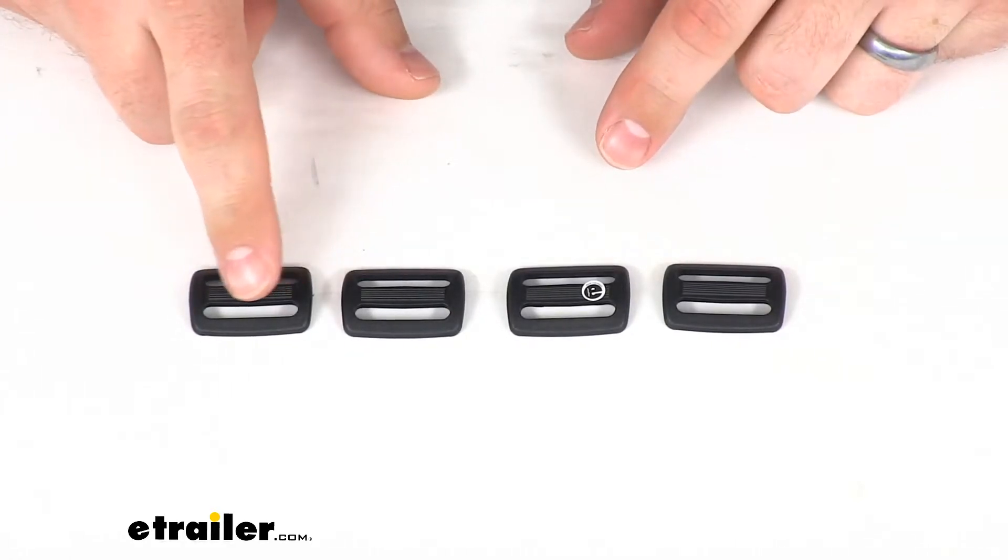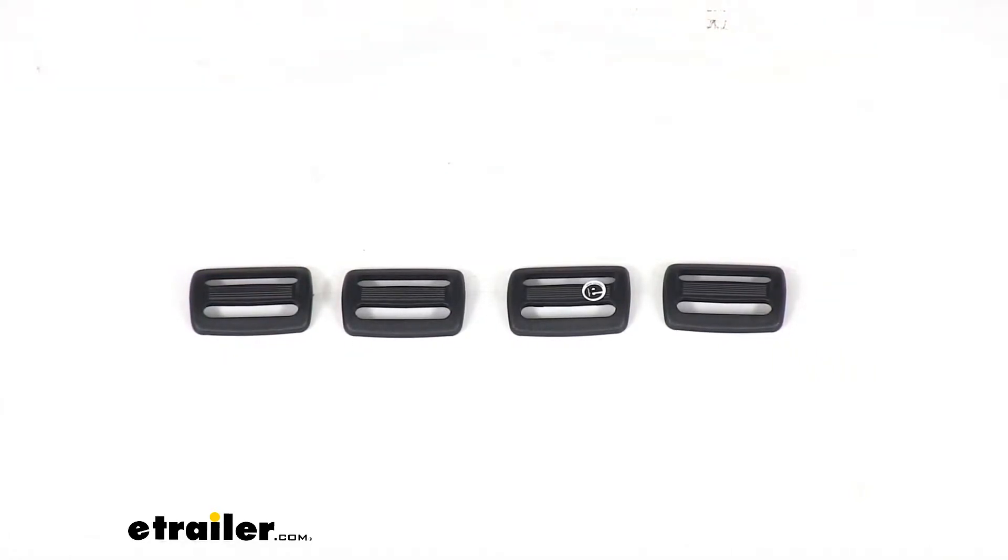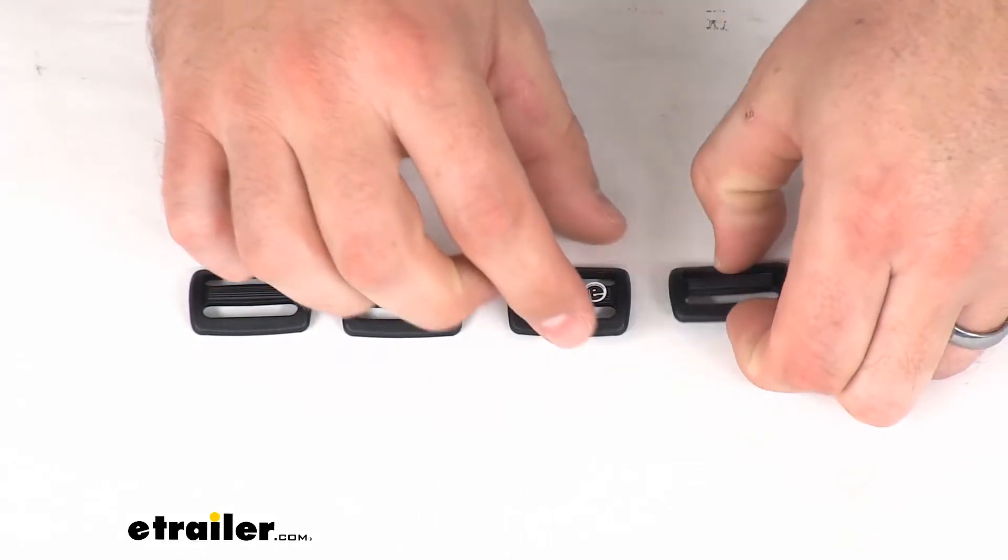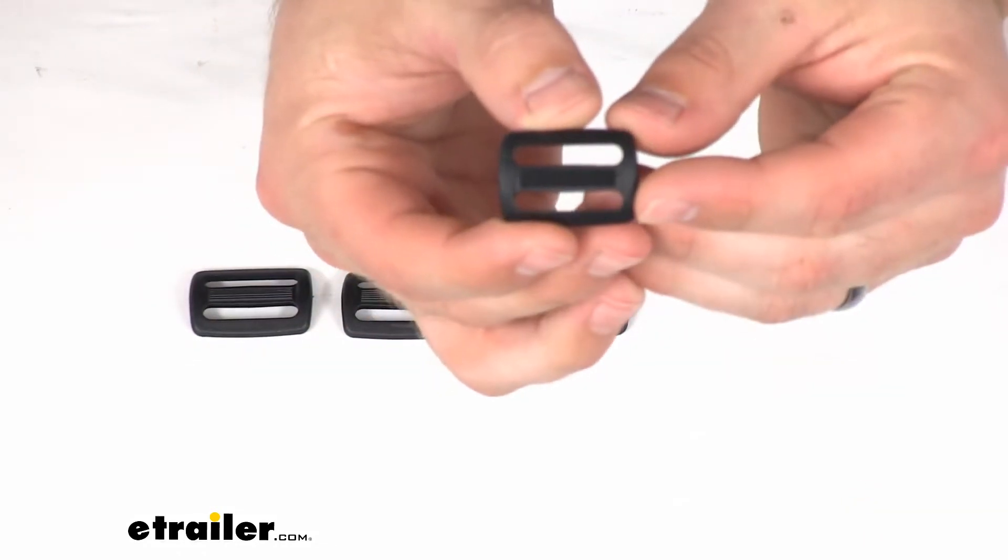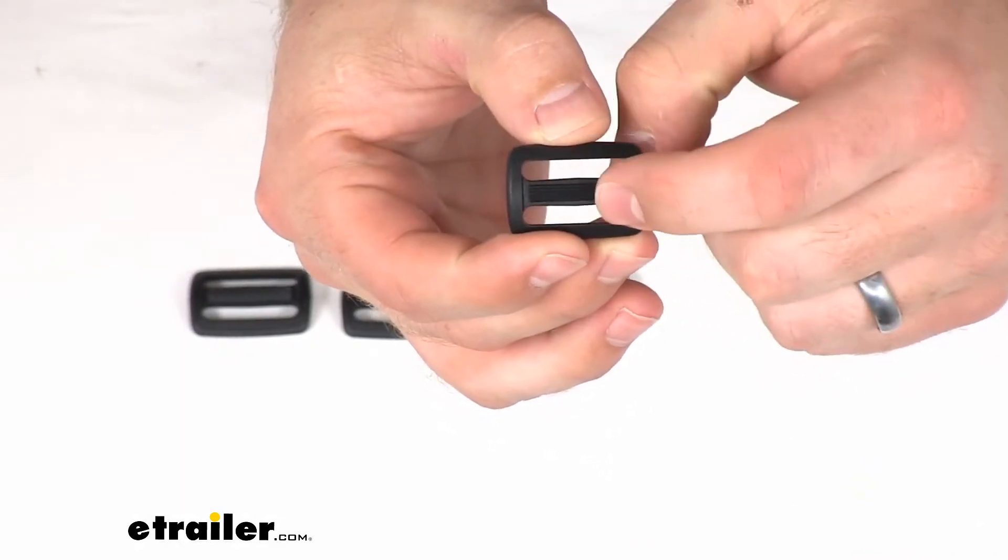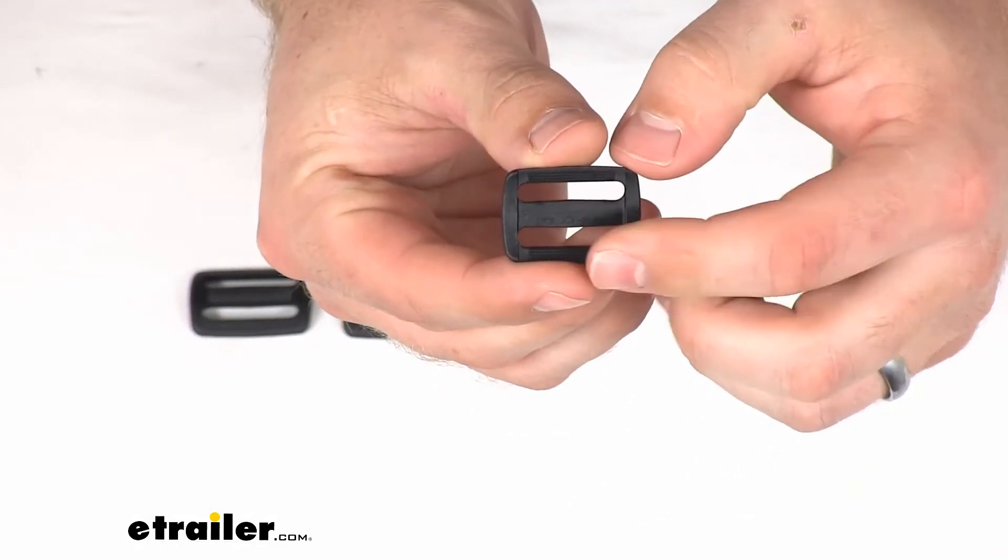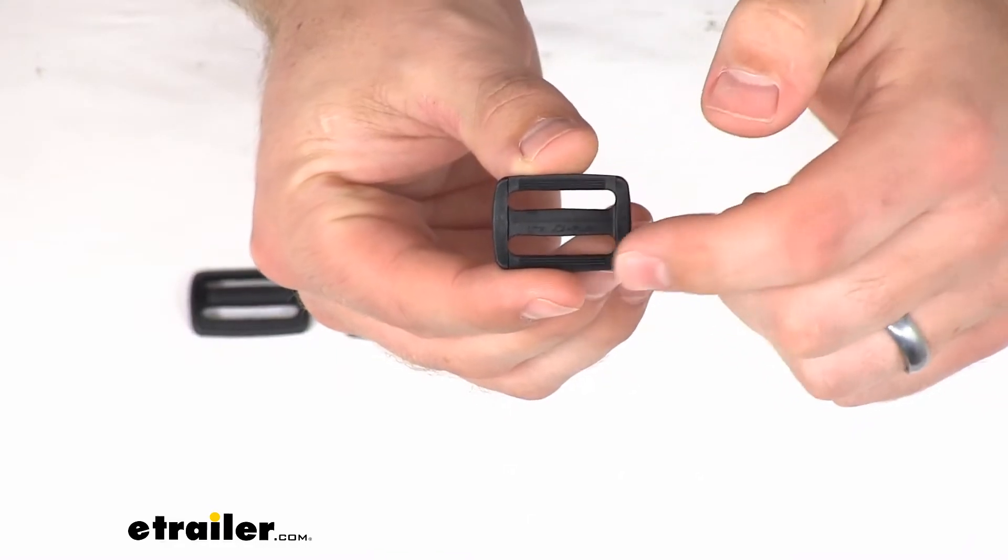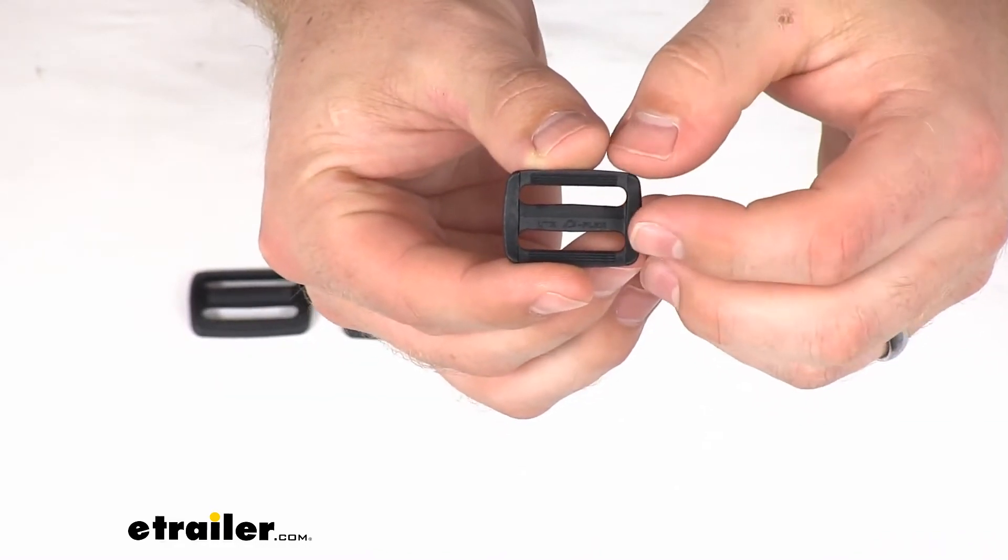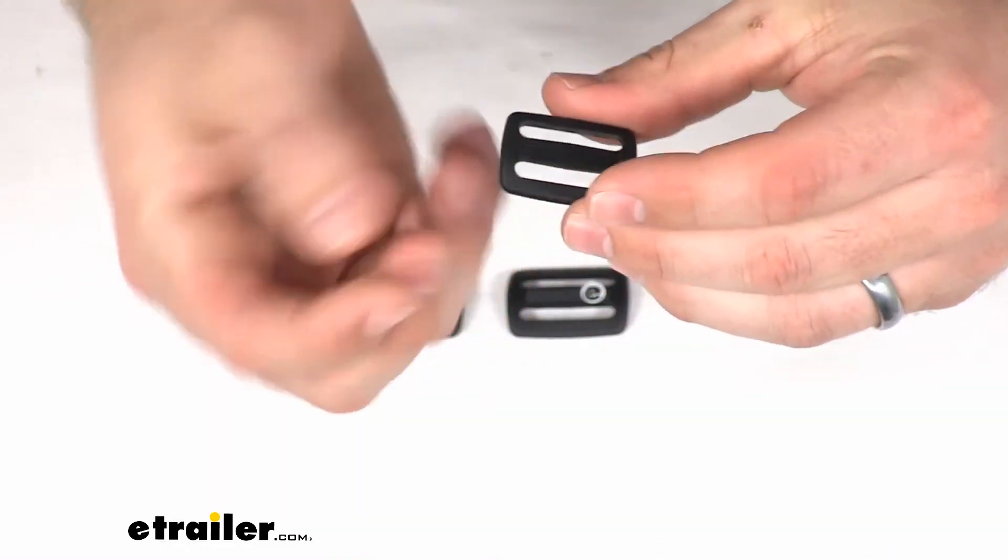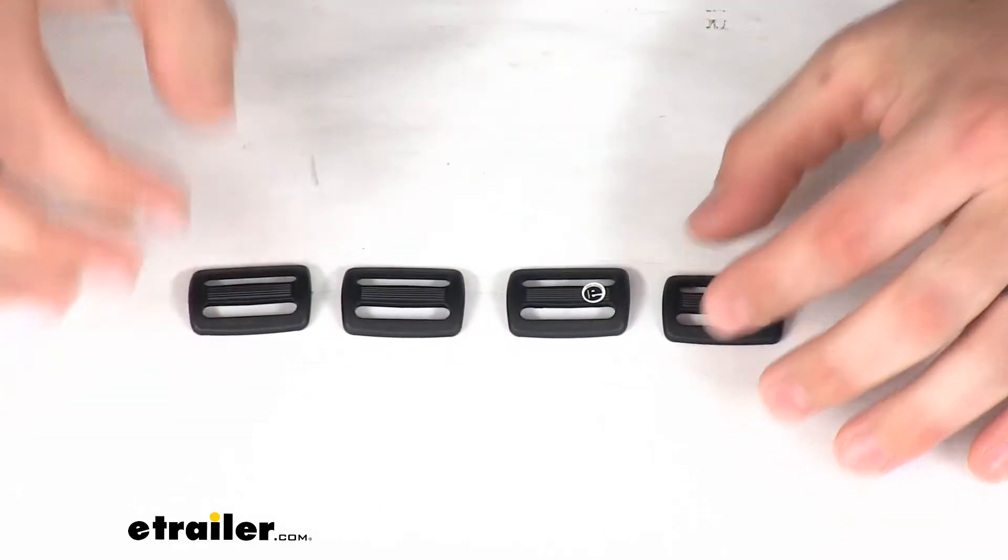These are intended for one inch wide webbing and they do have a textured top to them. You can see that in the middle section and then on the bottom the far sides are textured to help give it more grip on your webbing to make sure that it's not going to slip through and give you a nice connection.